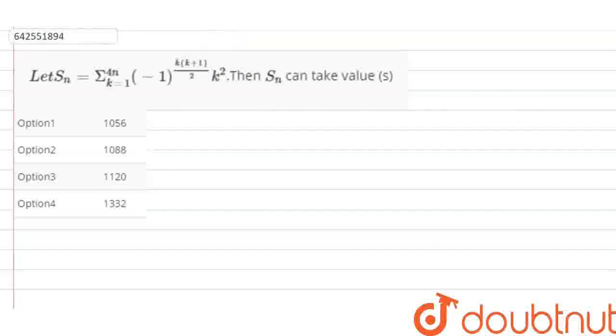The problem is Sn is equal to summation of k equals 1 to 4n of minus 1 to the power k times k plus 1 divided by 2 times k square.